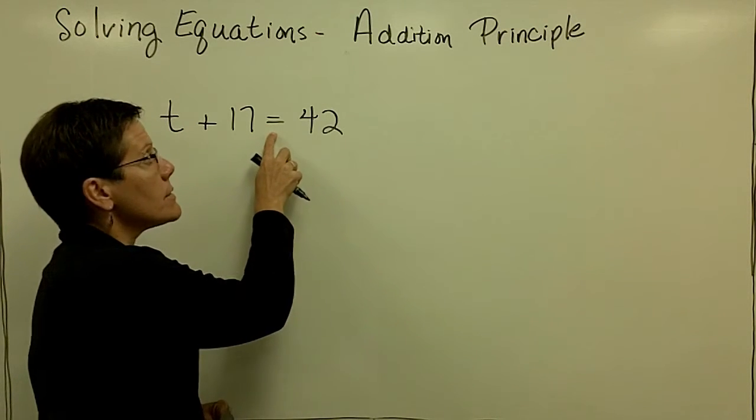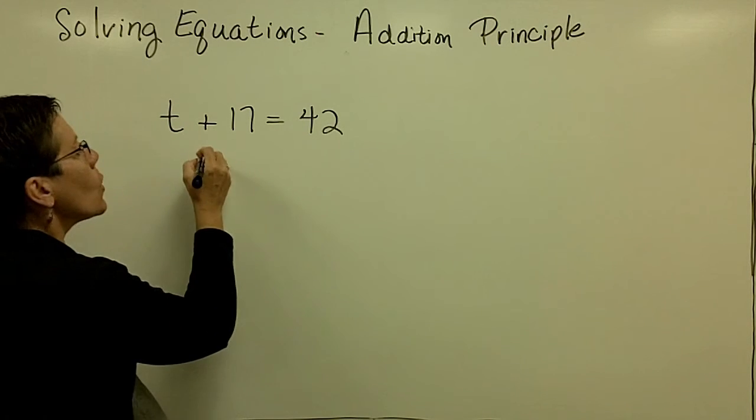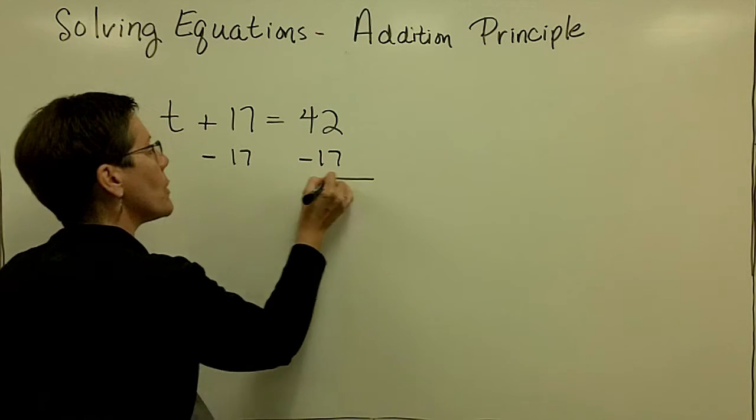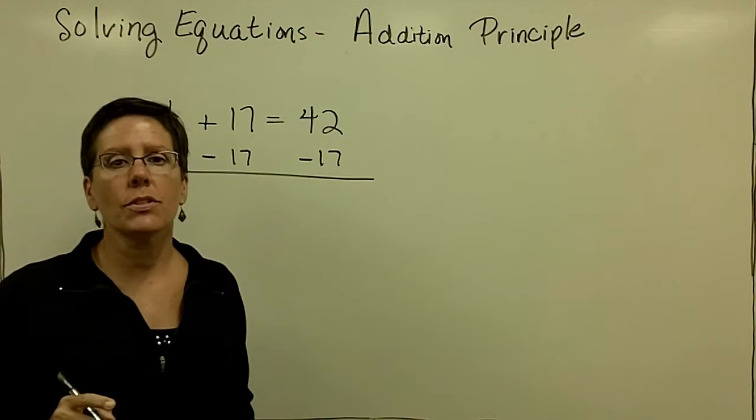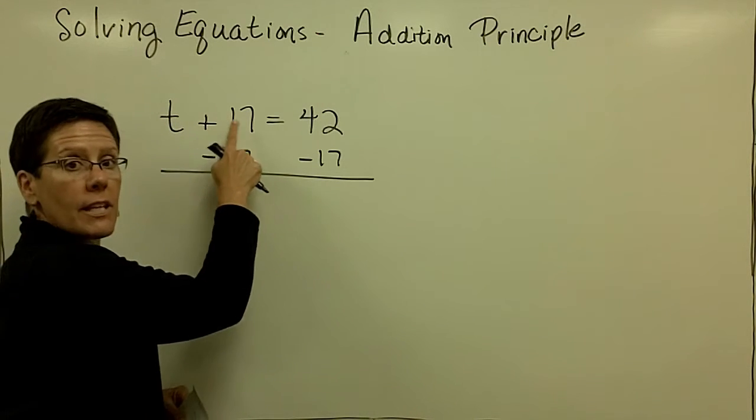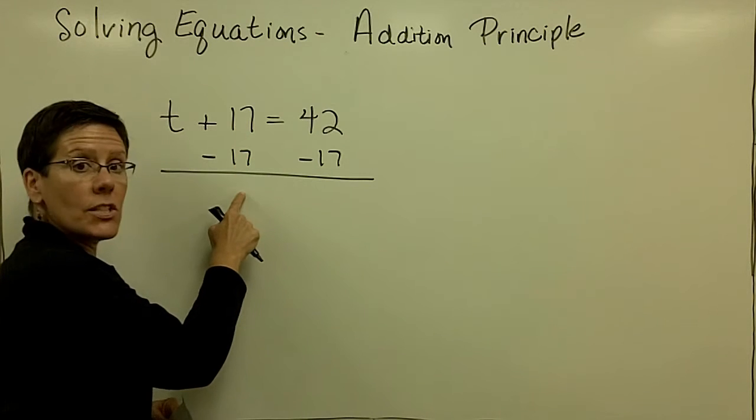This is equal to that. And so I can add the same thing to both sides, or if I'd like, I can take away the same thing from both sides. I'm going to choose to take away 17 from both sides of this equation, because I have 17 here. If I take away 17 from it, I have 0.